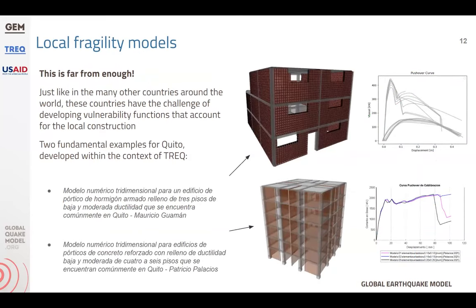As every country and city faces, there is not enough work yet to account for local building constructions in actual fragility functions that can be used to estimate losses for the particular universe of structures found in Quito, Santiago de los Caballeros, and other cities. So within the framework of the TREC project, we were also helping students and researchers develop these types of local fragility functions, testing them, validating them, and providing expertise and knowledge to see if this research could be implemented within the city models.